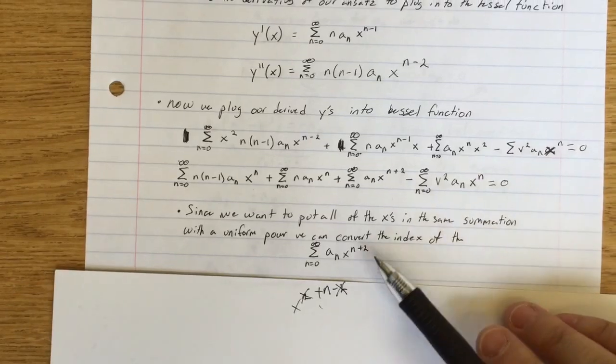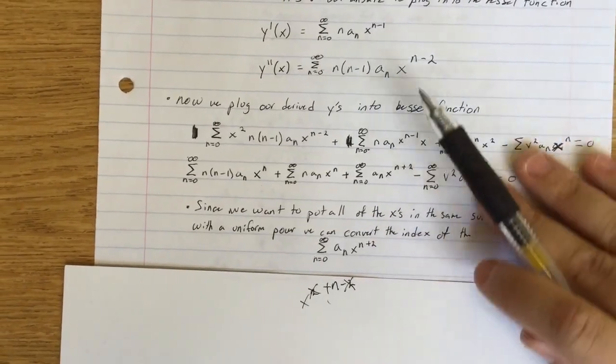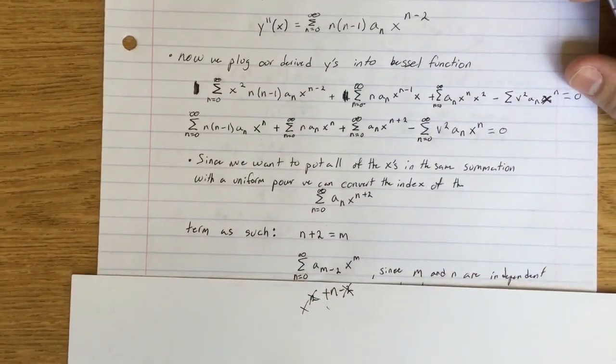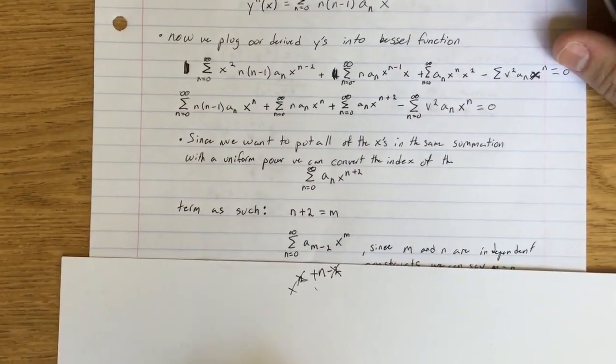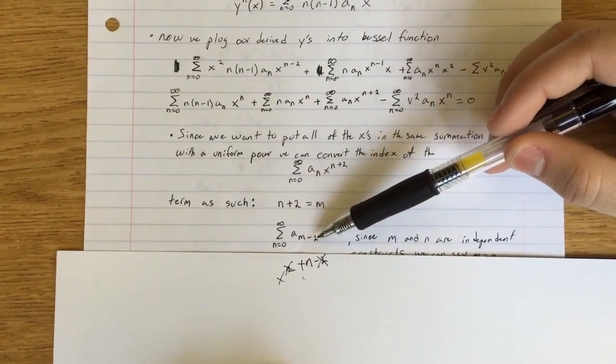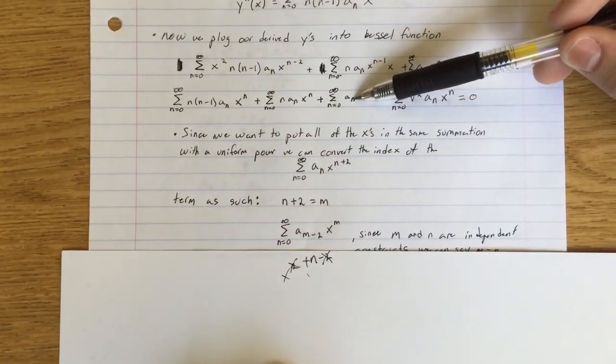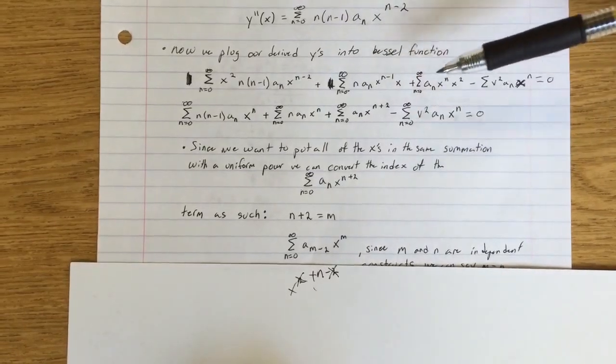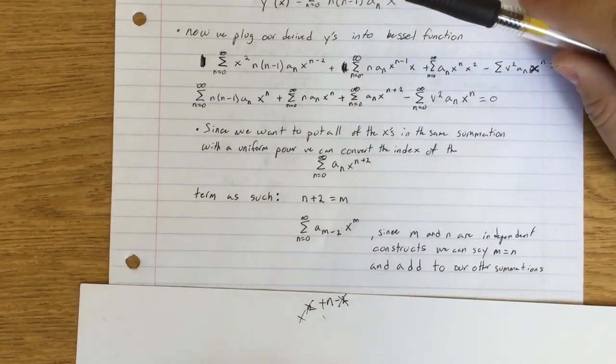So now what we do is we set it up where m equals n plus 2. Now when we put this into our form, it becomes a_(n-2) here, because n equals m minus 2.